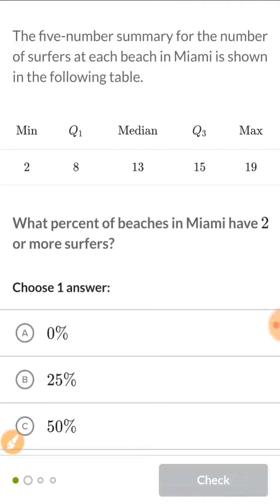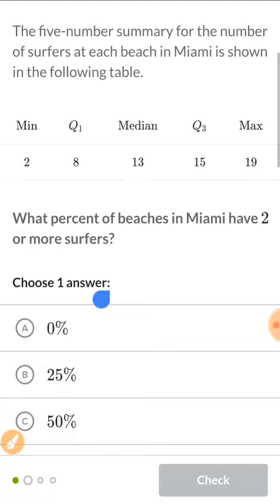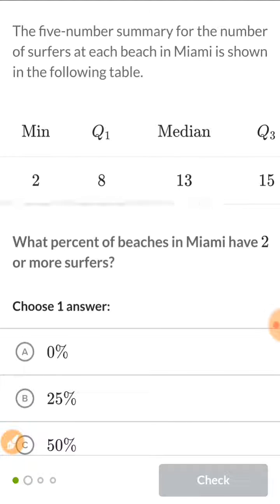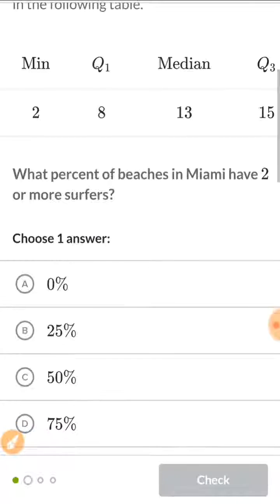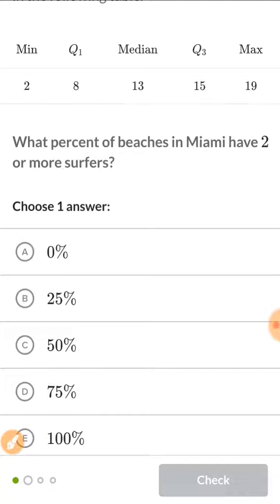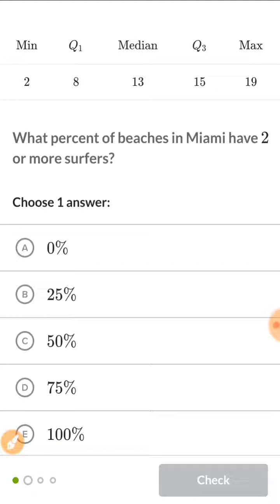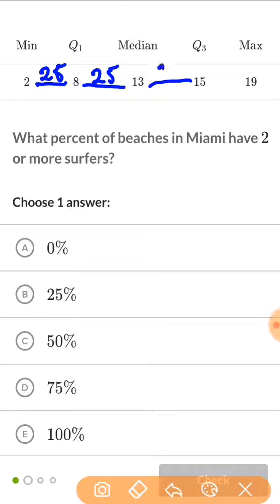So here's another table to look at each beach in Miami. So the question is, what percent of beaches in Miami have two or more surfers? Well, again, we recognize now that 25% of your data is between 2 and 8. 25%, 25% between 8 and 13, 25% between 13 and 15, and 25% between 15 and 19.